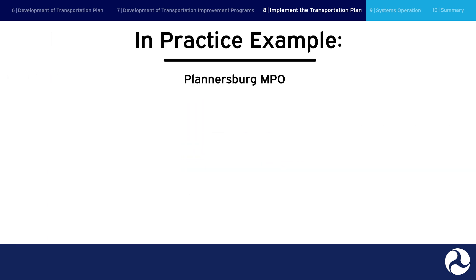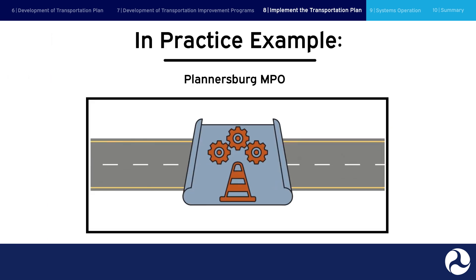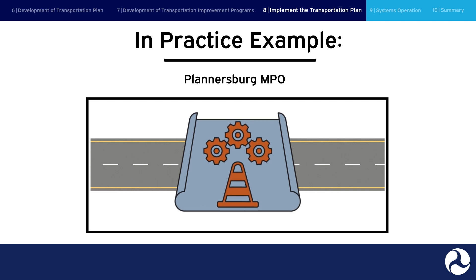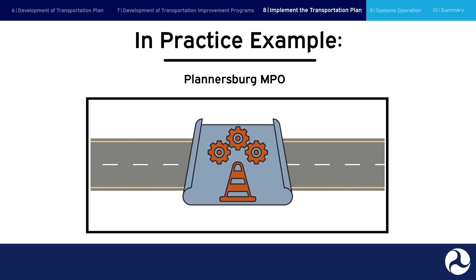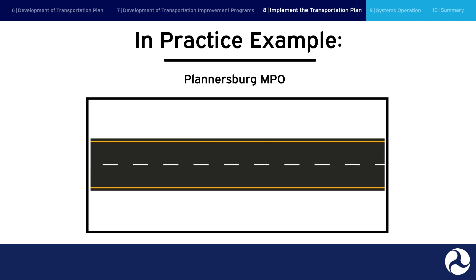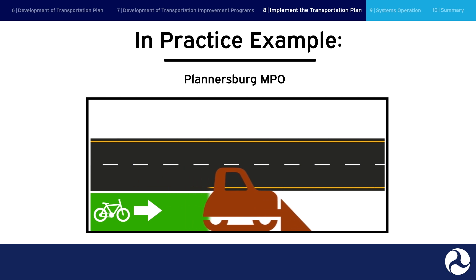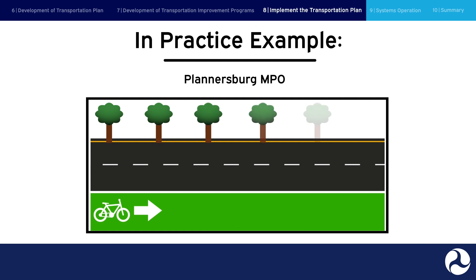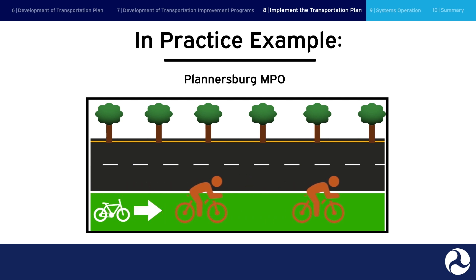In practice example: the project is included in the TIP and the local Public Works Department begins work to design and build the facility. The city secures a landscape architecture and engineering consultant to move forward with designing the bike lane. During the design process, the city pursues environmental clearance and obtains required permits. Once the design and environmental review are completed, the land necessary for the bike lane is purchased and the project is put out to bid. A contractor is selected, and construction commences.